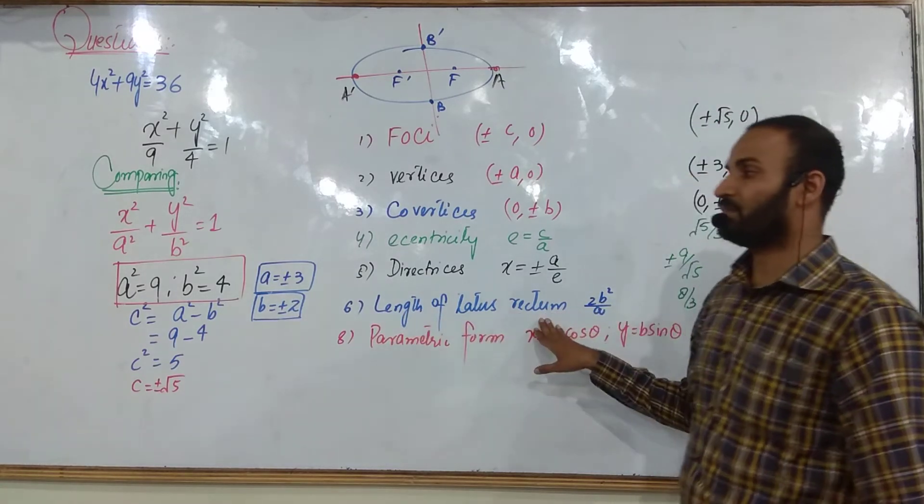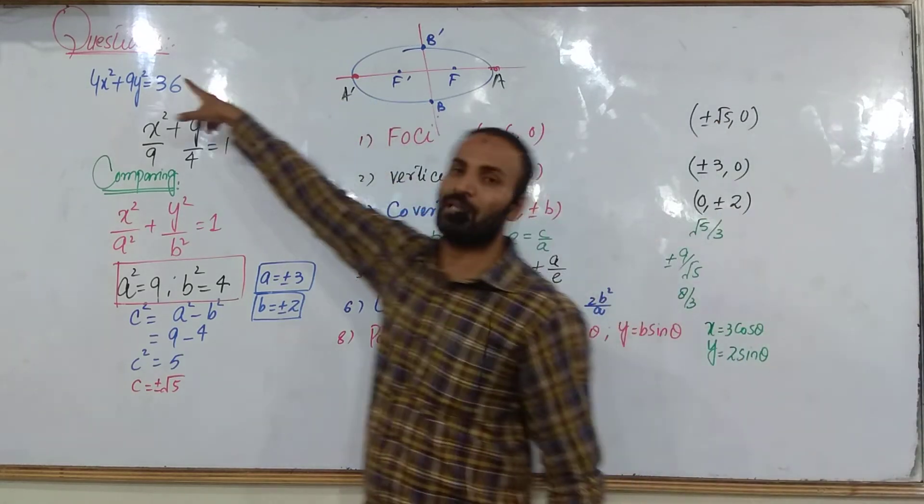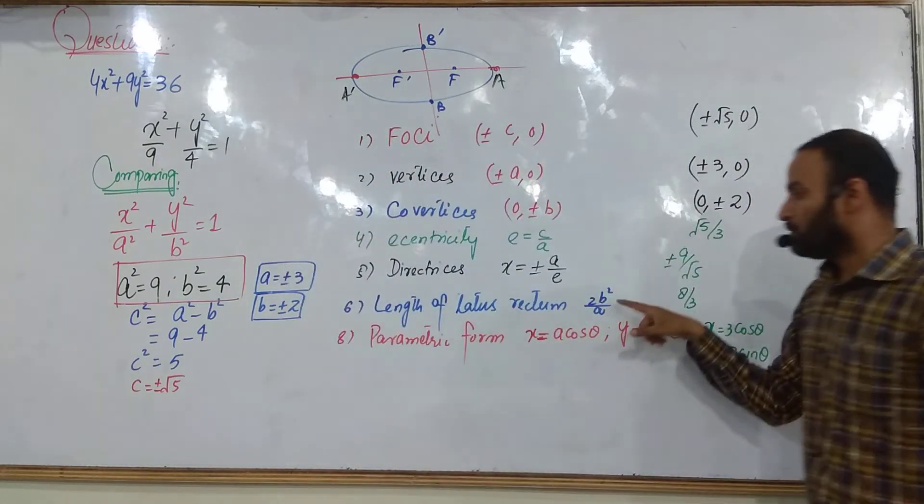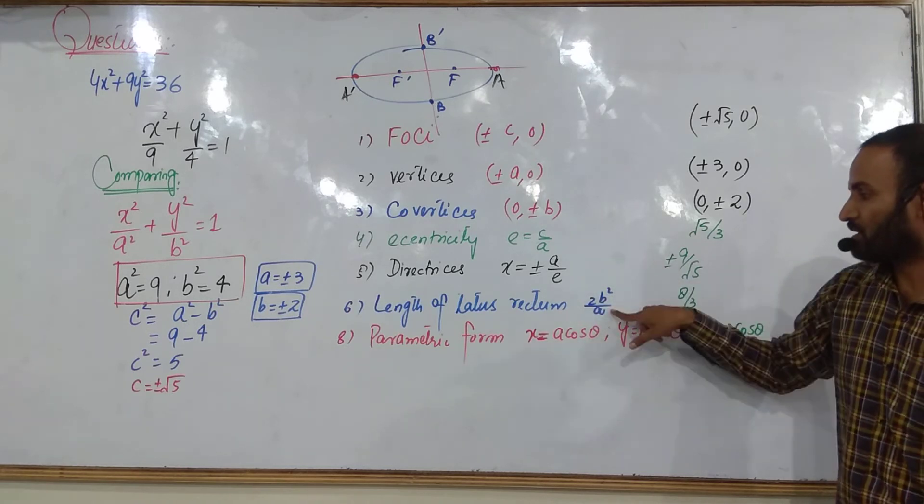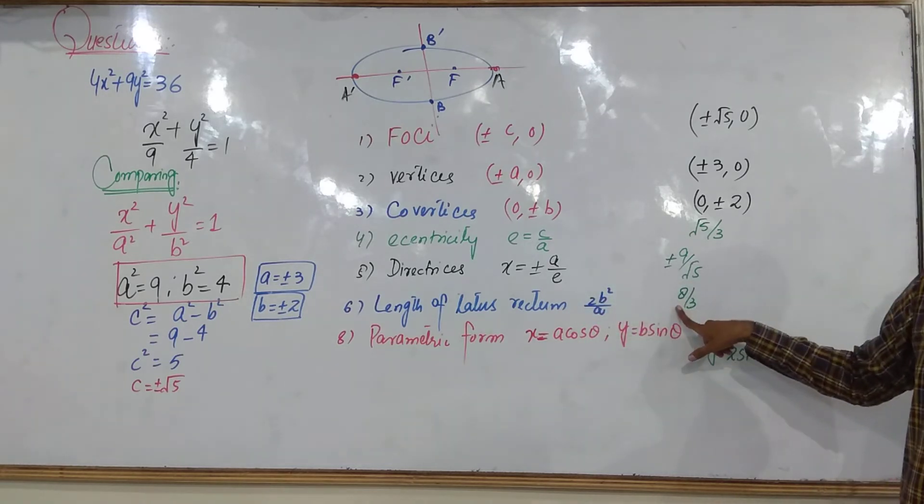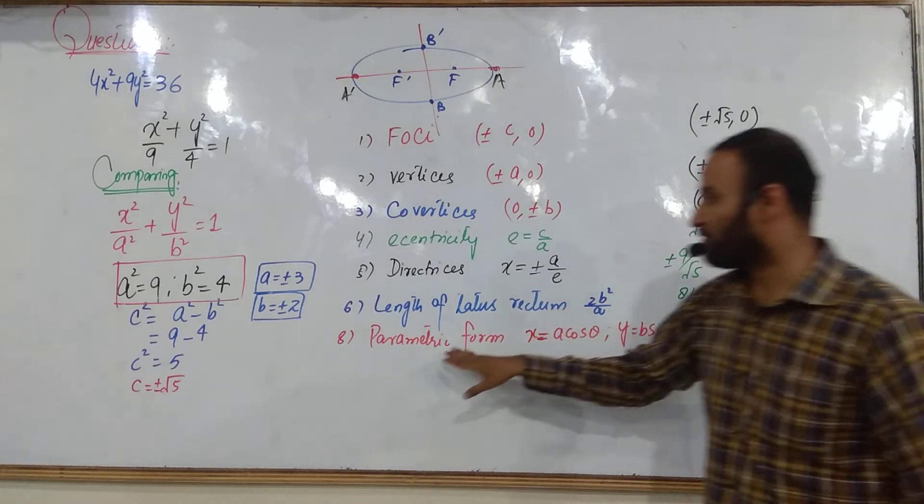If the question asks about the length of the latus rectum regarding this ellipse, you just put the value of b and A in this formula and you will get the value of the length of the latus rectum.